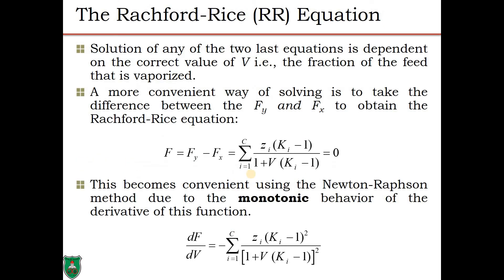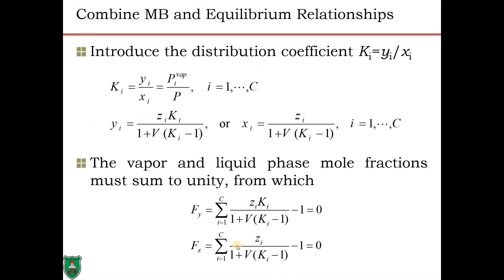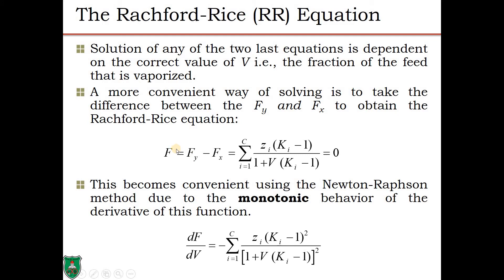A better approach is to subtract Fy from Fx, which eliminates the ones in the summations. Rearranging this gives the Rachford-Rice equation, one of the most famous equations in chemical engineering and the basis for flash calculations in distillation. This equation has only one unknown — the vapor fraction V — so we substitute numerical values and solve. The key advantage of the Rachford-Rice equation over Fx and Fy individually is that it is a monotonically increasing function of V.